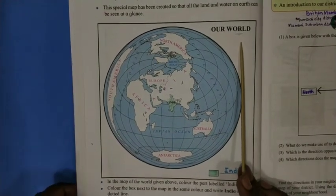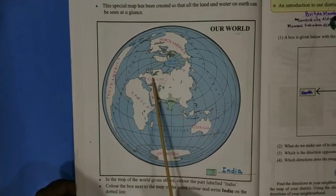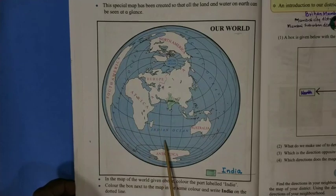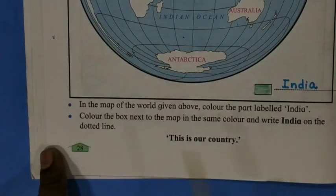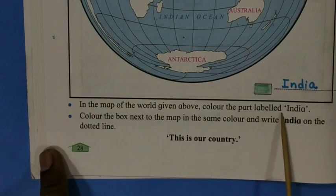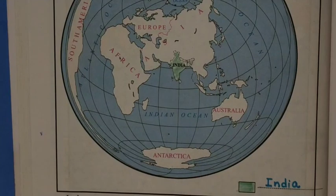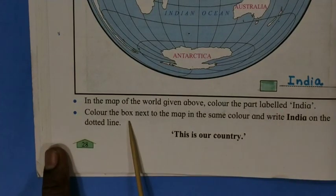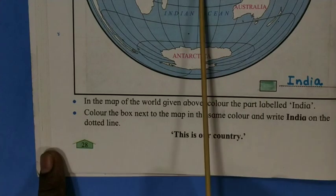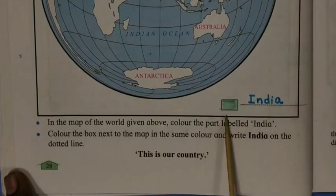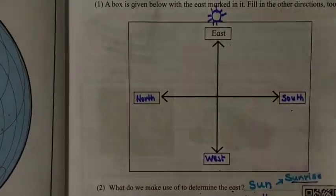Now let us see the world map. This is our planet Earth, also called the world. In this map, the continents are shown in white color and the oceans in blue color. The question asks us to color the part labeled India on the world map. India is here — color our country. Then color the box next to the map in the same color and write 'India' on the dotted line. I used green color for India and wrote the name.